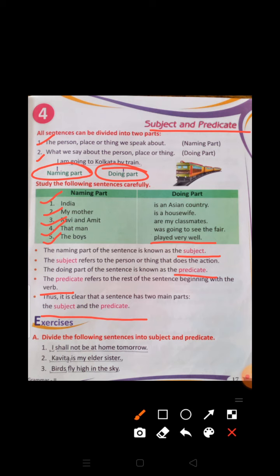Now come to Exercise A: Divide the following sentences into subject and predicate. Number 1: I shall not be at home tomorrow. — 'I' is the subject and 'shall not be at home tomorrow' is the predicate. Number 2: Kavita is my elder sister. — 'Kavita' is the subject, 'is my elder sister' is the predicate. Number 3: Birds fly high in the sky. — 'Birds' is the subject and 'fly high in the sky' is the predicate.